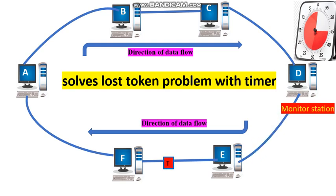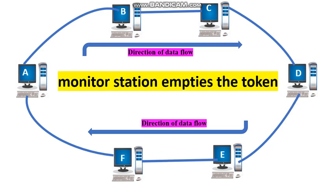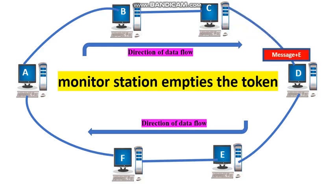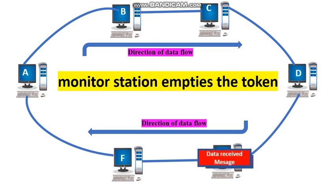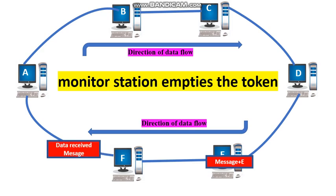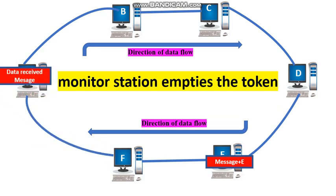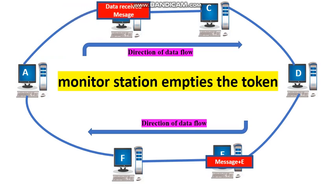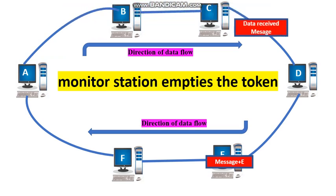Another problem: if station B wants to send data to station E, station B holds the token and transfers the data and destination address E to the next station. When E receives the token, it copies the data and transfers a data receipt message to the next node. When station B reads this receipt, it should empty the token. But if B neglects to remove its data, that token keeps travelling around the ring, which is of no use.